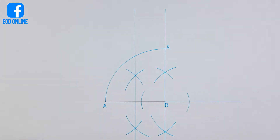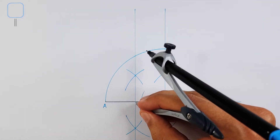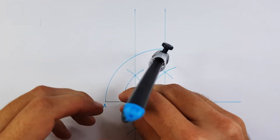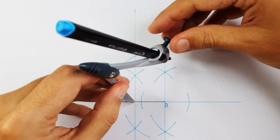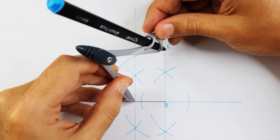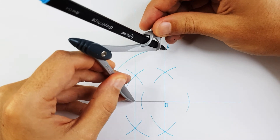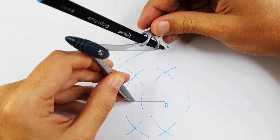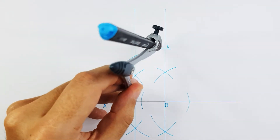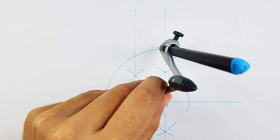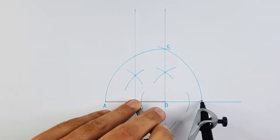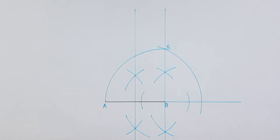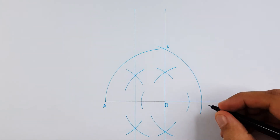Place your compass on the middle point of line AB. Adjust your compass all the way to point C. Project point C onto your extended line. You can label this intersection as point D.